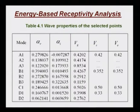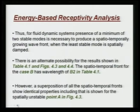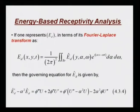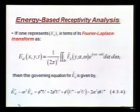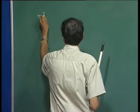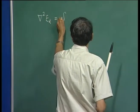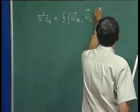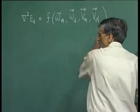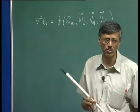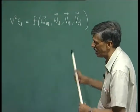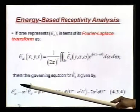Please understand that I emphasize this is an energy-based receptivity analysis, not a stability analysis. The governing equation for the disturbance energy written in Fourier-Laplace formalism is an inhomogeneous equation, unlike the Orr-Sommerfeld equation which is homogeneous. There is a distinct forcing term here. Once you solve the Orr-Sommerfeld equation, you can see what drives the energy.